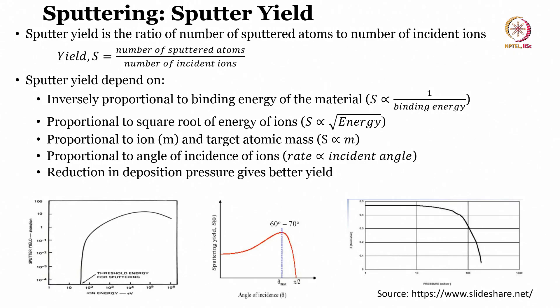To understand sputtering yield S — the ratio of sputtered atoms to incident ions — a higher S means better sputtering efficiency. Sputter yield is inversely proportional to the binding energy of the material, proportional to the square root of ion energy, proportional to ion mass and target atomic mass, proportional to the angle of incidence, and a reduction in deposition pressure gives a better yield.